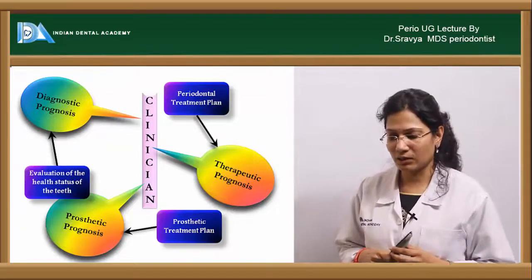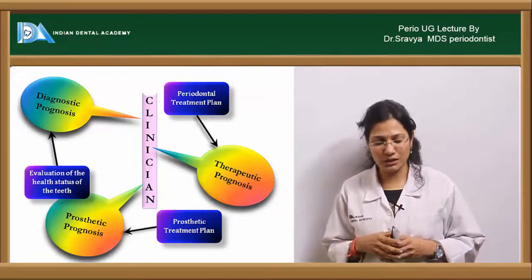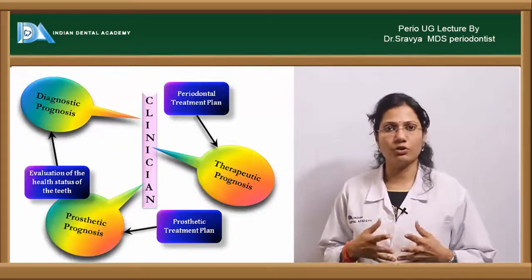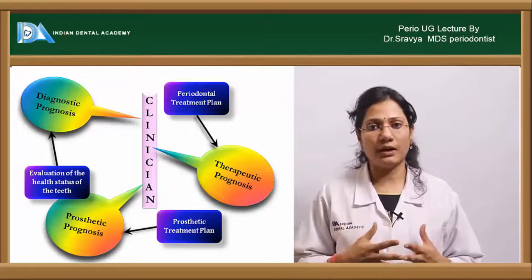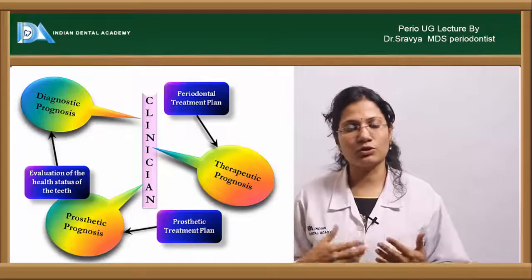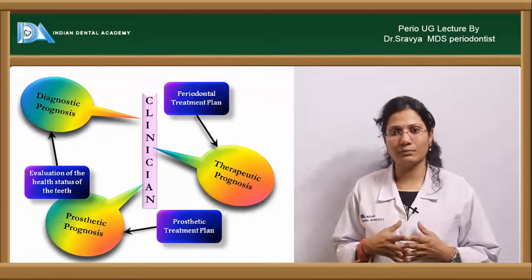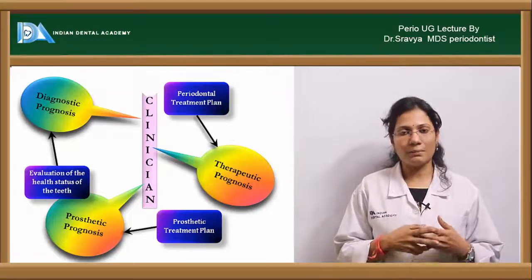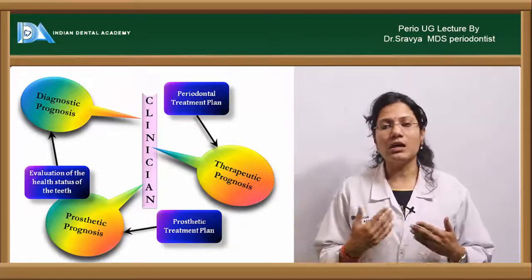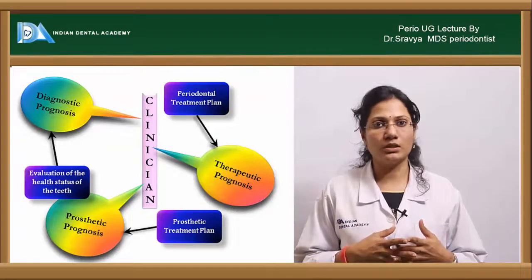There is something called a provisional prognosis and something called a permanent prognosis. Provisional prognosis is determined when, for example, there is a lot of calculus in the mouth and you are not able to identify the depth of a periodontal pocket. You perform phase 1 therapy — proper scaling and root planing — then wait for a certain period of time, re-evaluate the periodontal status, and determine whether that particular tooth can be saved. For instance, consider a grade 2 mobile tooth with respect to tooth 1-1.